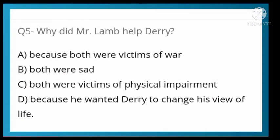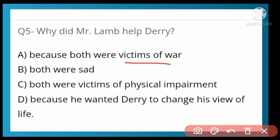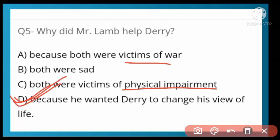Why did Mr. Lamb help Derry? Because both were victims of war — both are sad. Both were victims of physical empowerment. The correct answer is: because he wanted Derry to change his view of life. Mr. Lamb wanted Derry, the young boy, to change his negative outlook and live in a positive way.